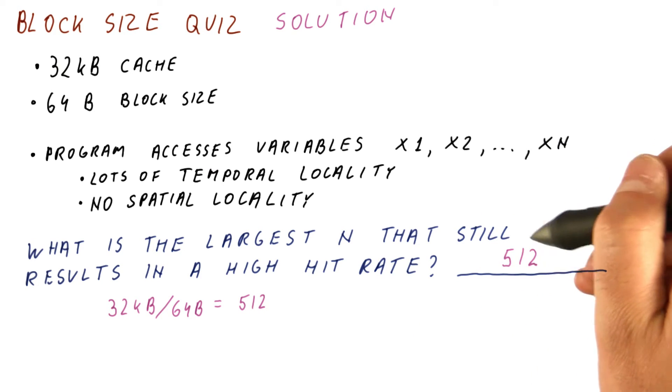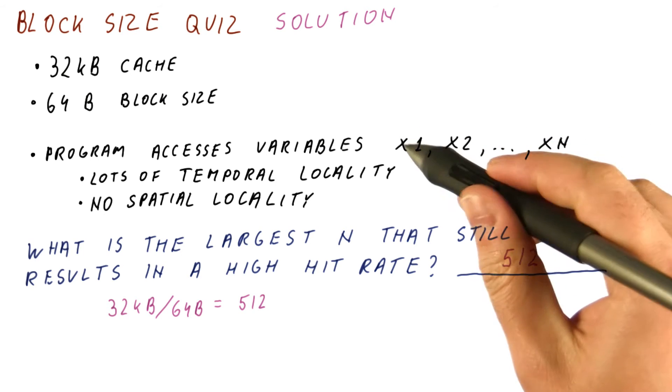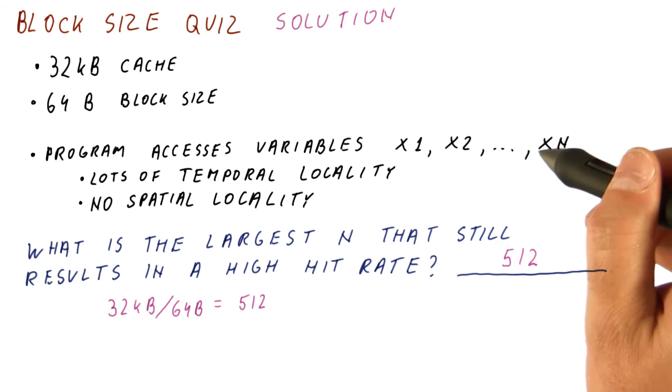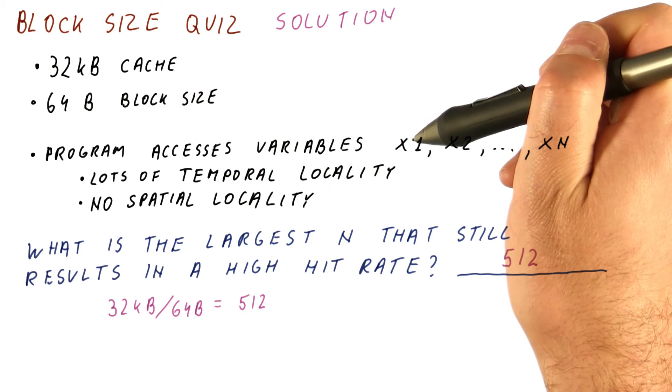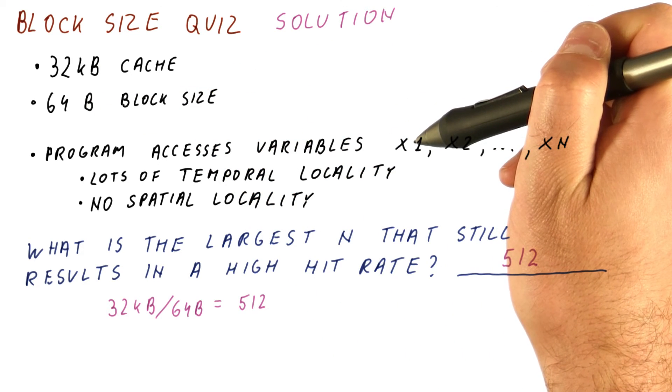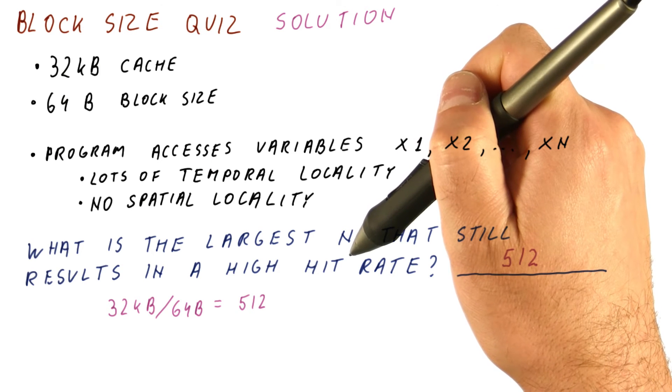If we have 512 or fewer variables, then the fact that each one of them has its own cache block in the cache, although the variable is probably only 4 bytes in size, is not going to hurt us in terms of hit rate.